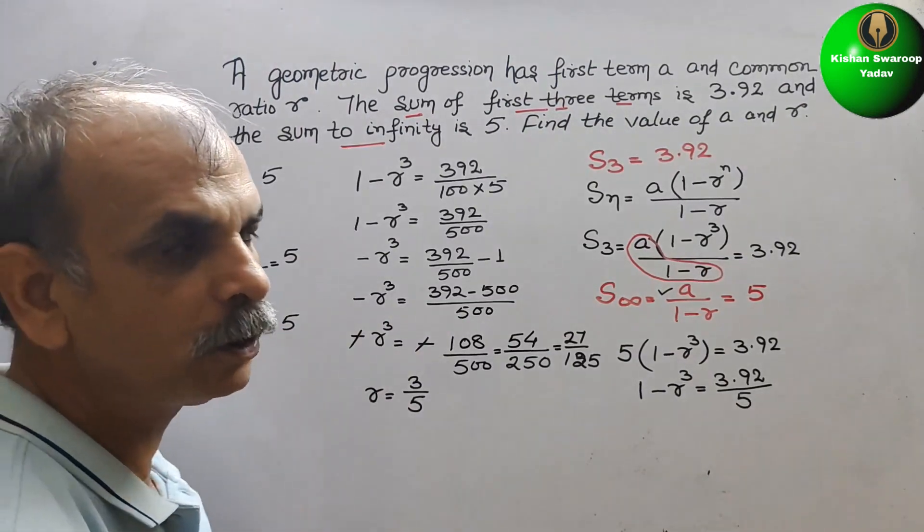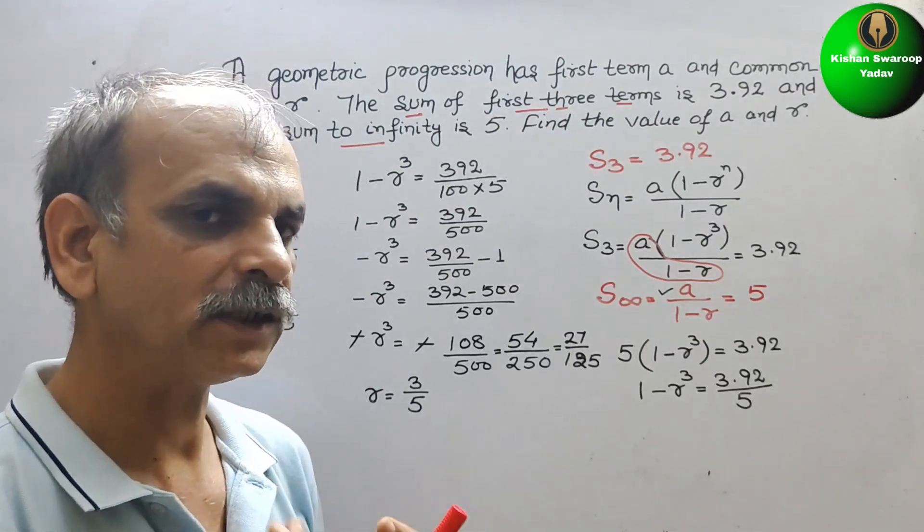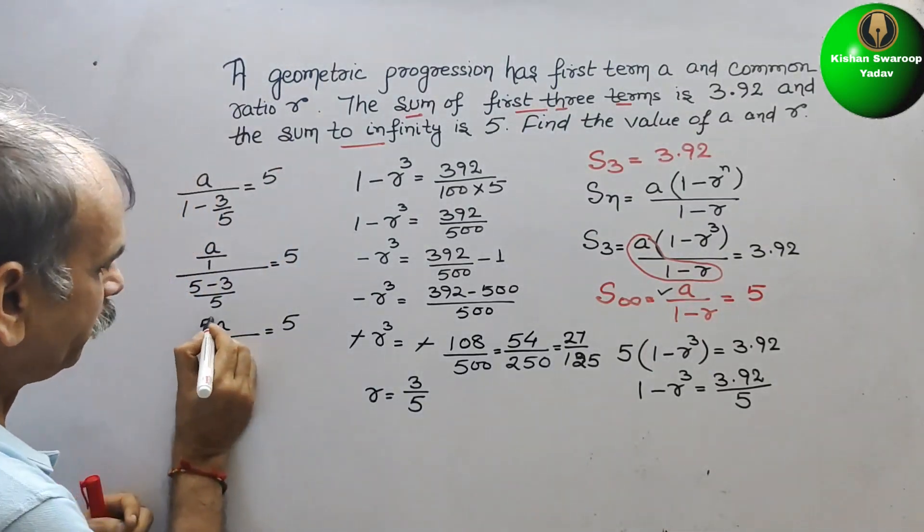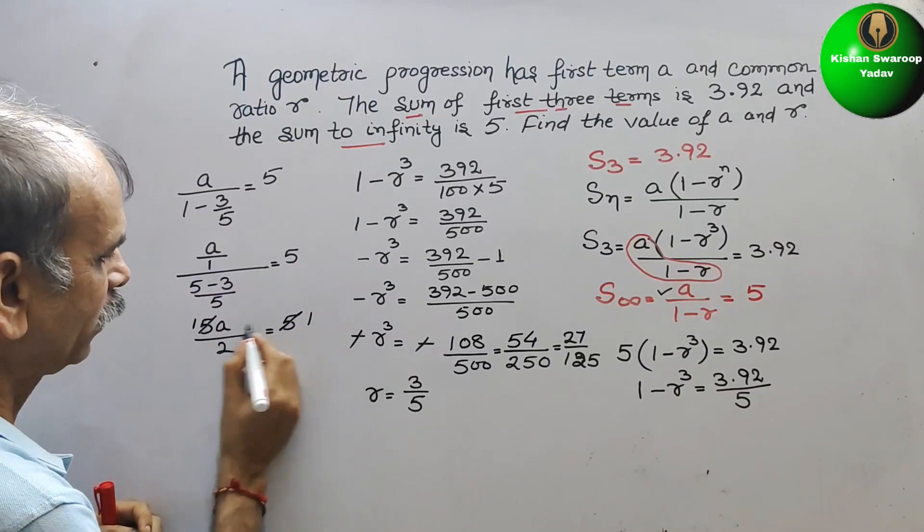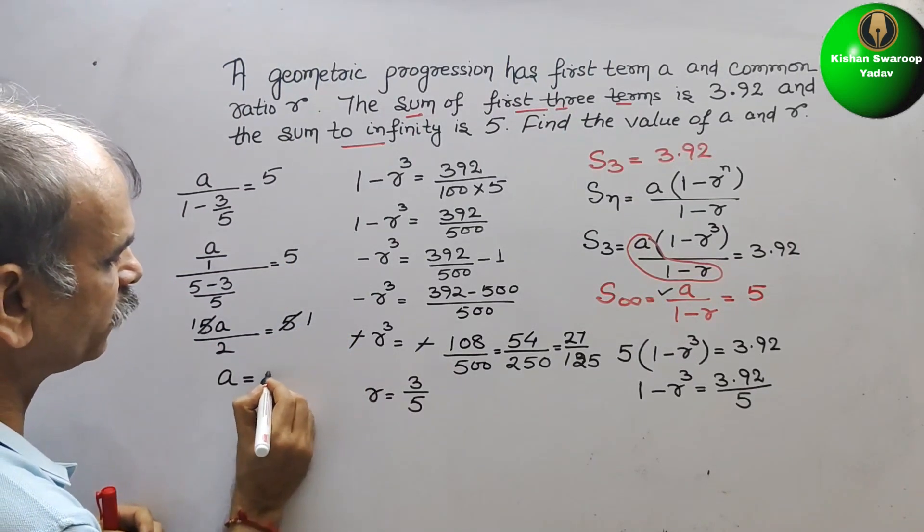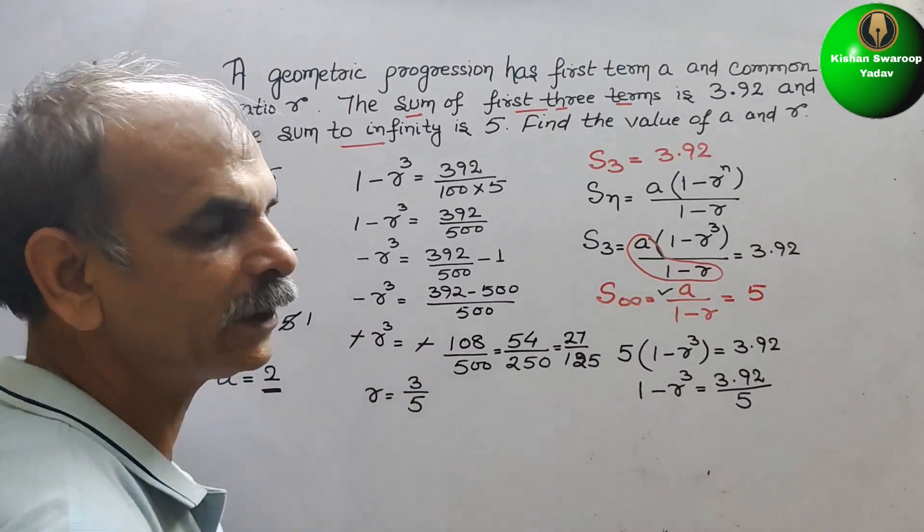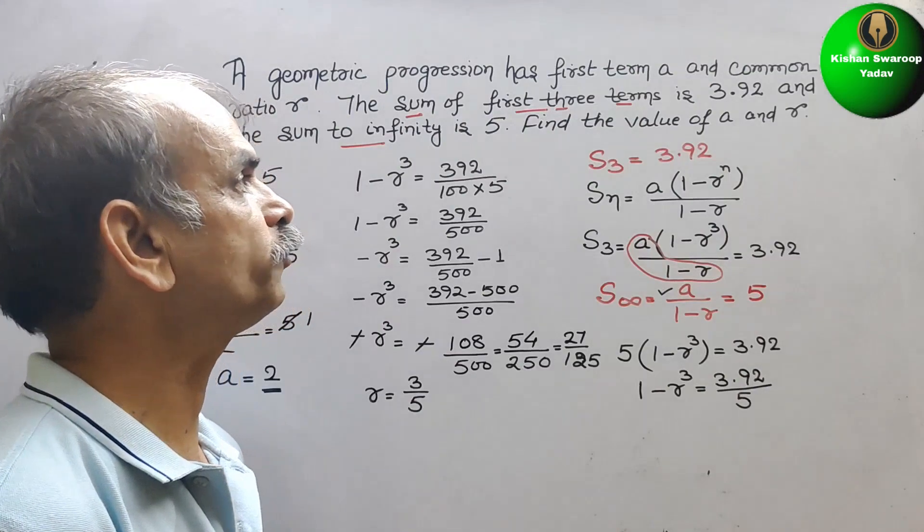I have already told, in numerator 5 is there. Just reduce them. So it will be 1, here also 1. Now go for cross multiplication. You will get A is equal to 2. A is 2, R is 3 by 5. Like this we have to find it out.